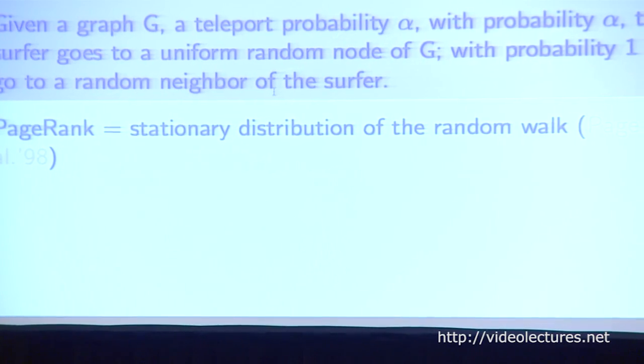I'm going to start with the well-known PageRank model. It was proposed by Larry Page et al. in 1998, and it is a model for measuring the importance of vertices in a network. We're given a graph with a random surfer, and at each step this random surfer will go to a uniform random node of the graph with probability alpha, and with probability one minus alpha, it will go to a random out-neighbor of the current vertex. The PageRank is the stationary distribution of this random walk.